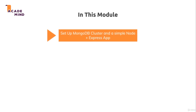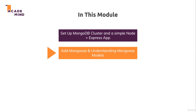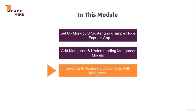So what's in this module? We'll learn what MongoDB is. We'll set up a so-called MongoDB cluster — the MongoDB server — and we'll set up a simple Node and Express app to see how we can interact between our backend and this MongoDB database. We'll then have a look at Mongoose and understand what Mongoose models are. Mongoose models help us define a structure for information stored in the MongoDB database. Finally, we will see how we can create and access documents stored in our database with Mongoose. That's what's inside this module — let's get started.